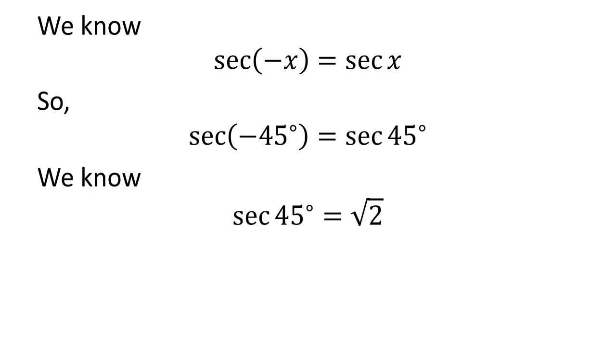We know the value of secant of 45 degrees is equal to square root of 2. So, we get the value of secant of minus 45 degrees is equal to square root of 2.